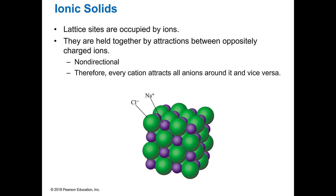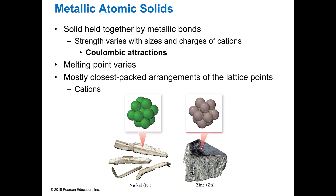Ionic solids, like sodium chloride salts — every cation and anion attract each other from different directions, and that's what gives them their strength. Metallic atomic solids are held together by metallic bonds, and metallic bonds are based on Coulombic attraction. They are the tightest packed of the lattices and they're all cations — held together by Coulombic or electronic attractions because there are no negative charges, since all metals are cations.